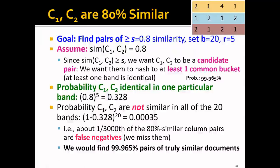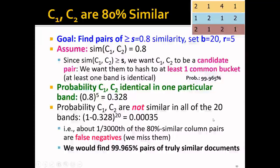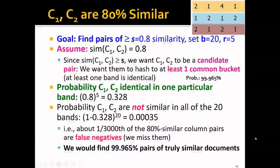The probability that C1 and C2 are not identical in all 20 bands would be (1 minus 0.3) raised to the power of 20, which is very small. This is because the probability of not being identical in one particular band is (1 minus 0.3), and since we have 20 bands, we raise that to the power of 20. So about 1 in every 3,000 of the 80%-similar column pairs are false negatives — they are truly similar pairs that we miss. But still, we will find more than 99% of truly similar document pairs, which is quite impressive.